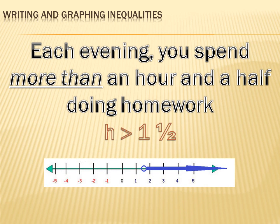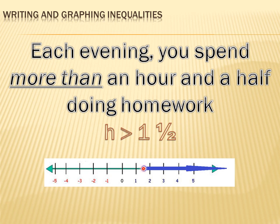It'd look like this. I'd have a number line, which in this case runs from minus five to five. And I'd put a circle at that one and a half, and draw an arrow in the direction of all the answers that would be in the solution set. Everything that satisfies H is greater than one and a half is symbolized by that arrow heading in the direction of larger than our circle at one and a half. That circle means one and a half is not included in the solution set, because one and a half is not larger than one and a half — but anything bigger than one and a half would be in the solution set.